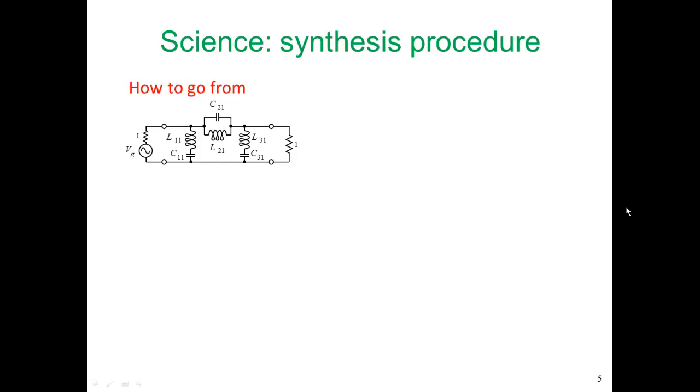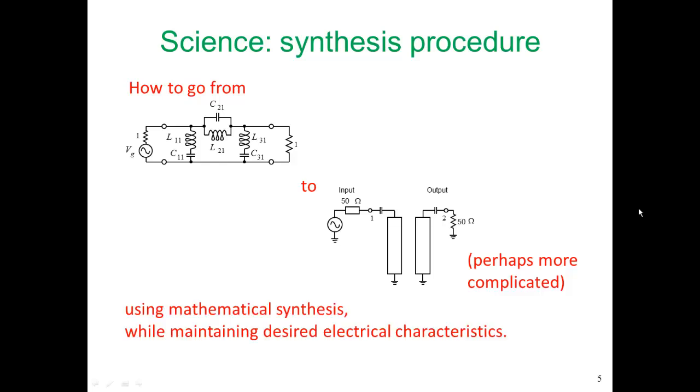So we want to know how to go from that to the structure with microstrip lines in it. Perhaps we will need to be a little bit more complicated. Maybe we'll have more than two parallel coupled lines. And to do this, we want to use mathematical synthesis.